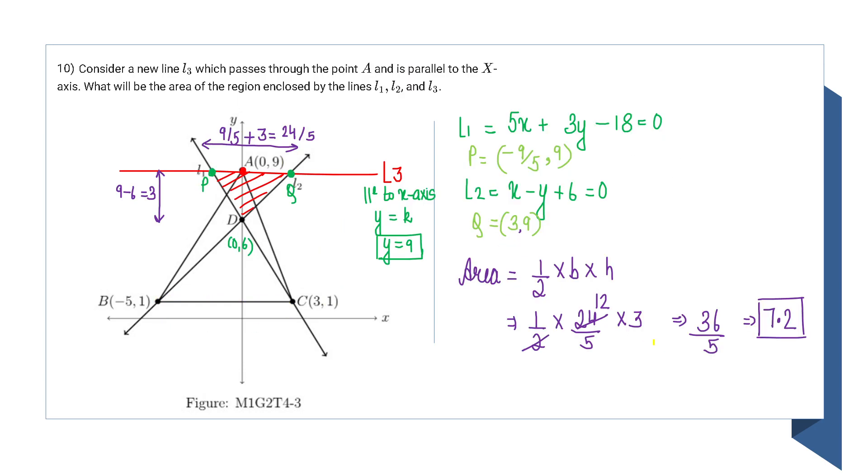Last question of our assignment 2. Consider a new line L3 passing through point A and parallel to the x-axis. This is the red line L3 which I have drawn. Point A is (0,9).